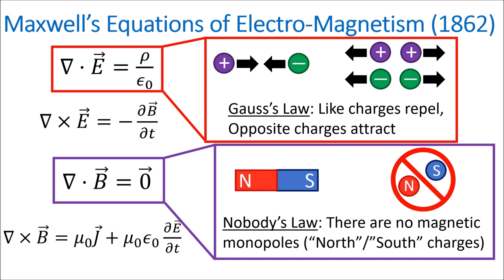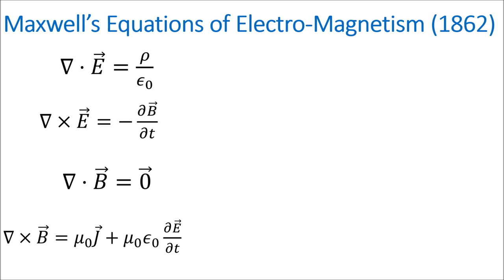Maxwell's equations turned out to be remarkably successful at describing electricity and magnetism, and they are responsible for our modern electrical technology like microphones, speakers, and radio antennas. However, there is a problem with Maxwell's equations.